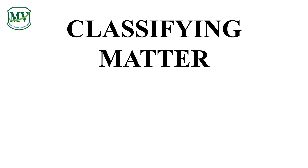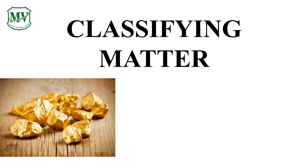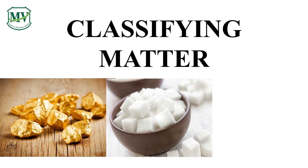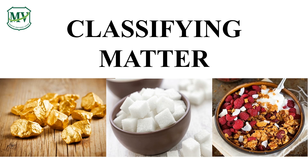The three pictures show different matters with different classifications. The first one is Gold Nuggets, which is an element. The second one is Sugar Cubes, which is a compound. And the last one is a bowl of cereal with milk and fruits, which is a mixture. So, what is the difference between an element, compound, and mixture?